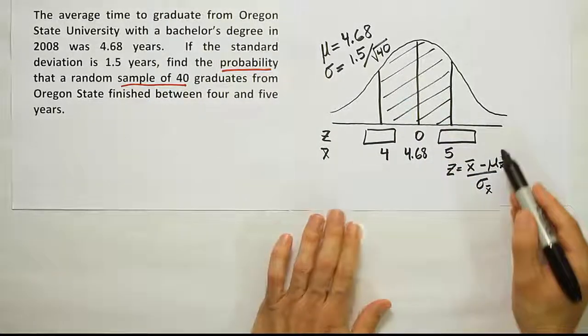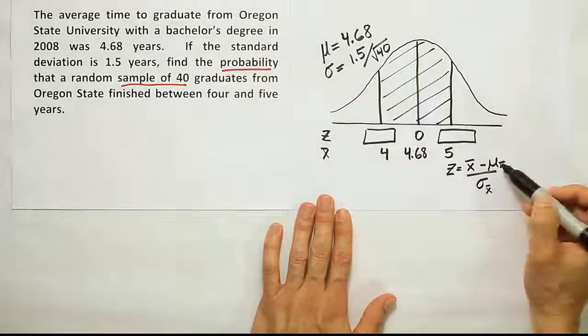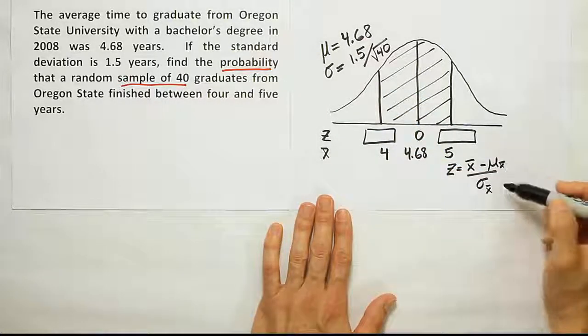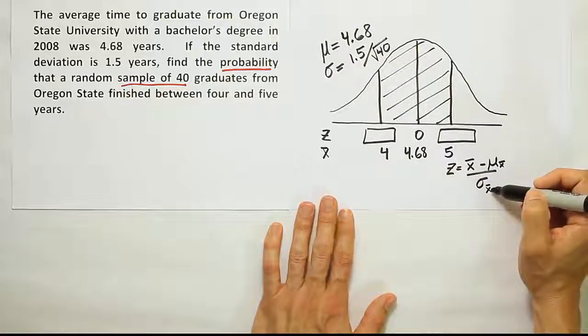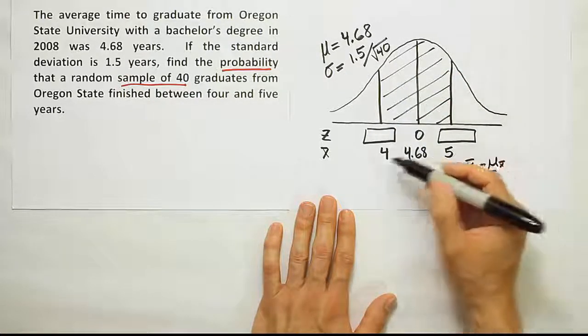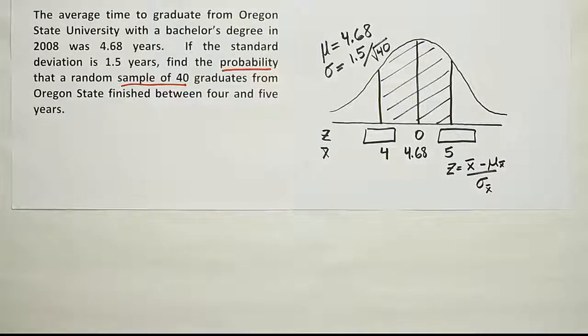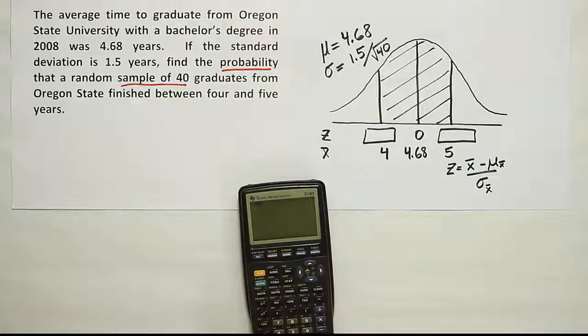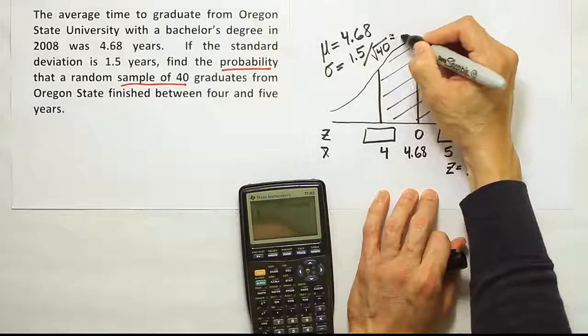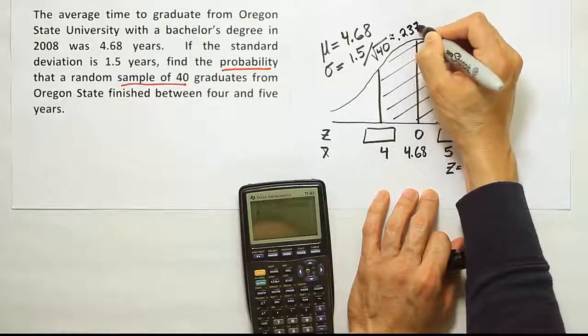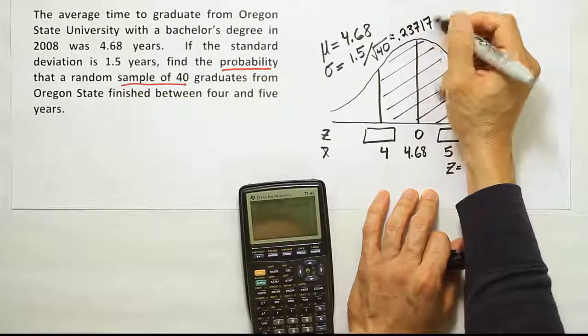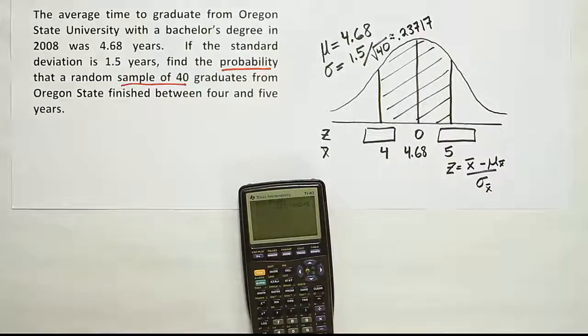Once we've done that, then we have all these items. The 4.68 is the mean for x bar. The standard deviation for x bar is 1.5 divided by the square root of 40 since the sample size is 40. And then x bar itself is either 4 or 5 depending which one we're converting. Let's go ahead and get that standard deviation down to a decimal number that we can just plug right into our formula. So we'll do 1.5 divided by the square root of 40. I end up with .23717.